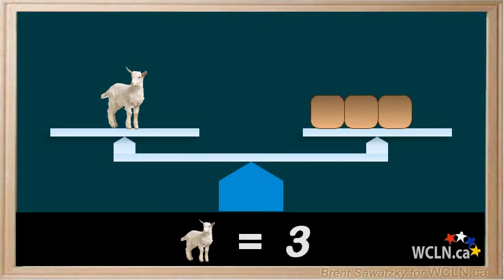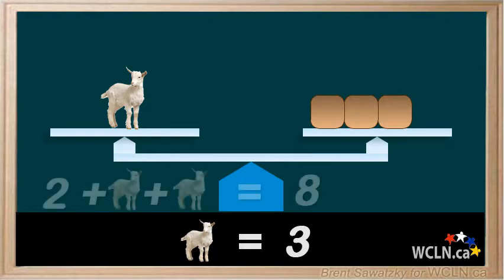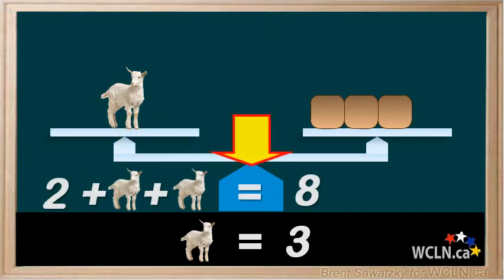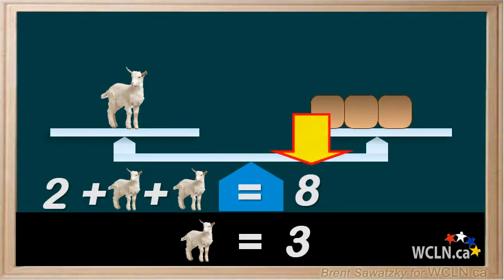This confirms our earlier finding. Now if we had made an equation to represent this situation, it would have started like this: two blocks and two goats on one side, an equal sign in the middle, and eight blocks on the other side. We removed or subtracted two blocks from both sides, then divided by two, and in the end we were left with a goat all by itself.